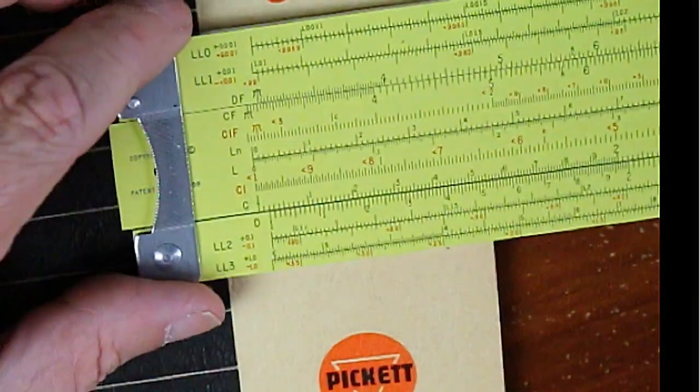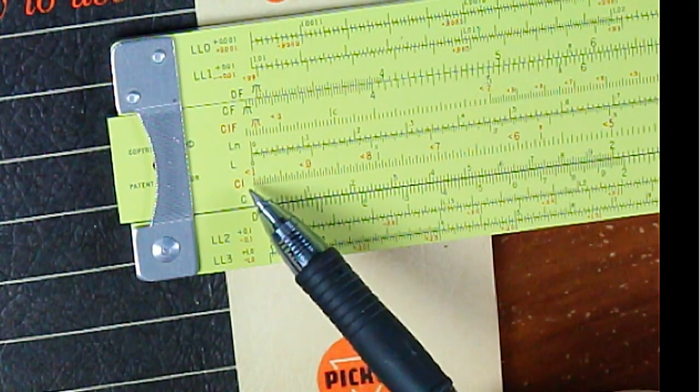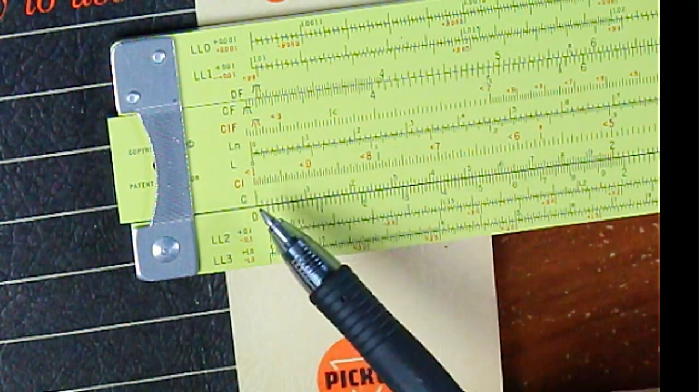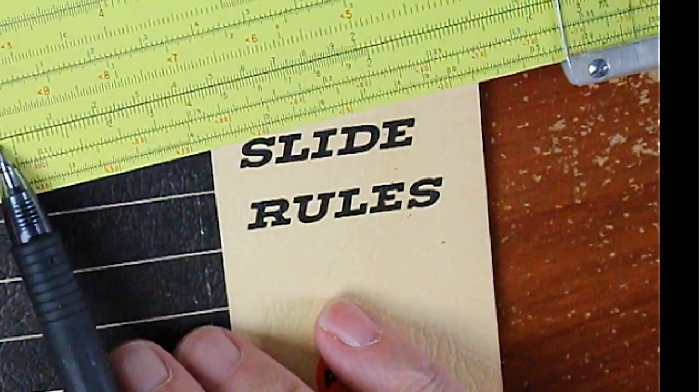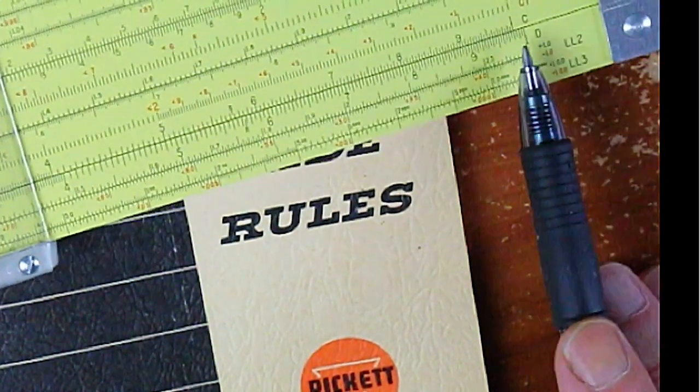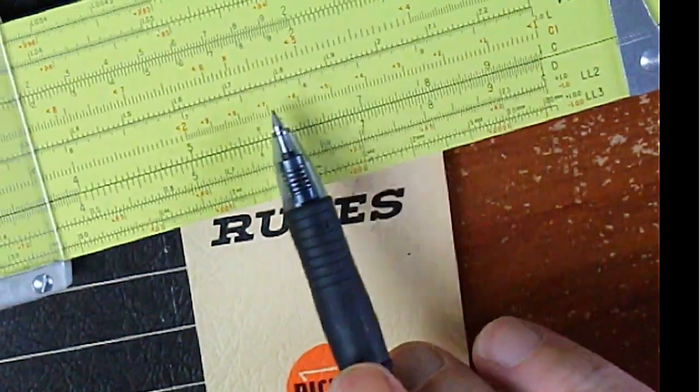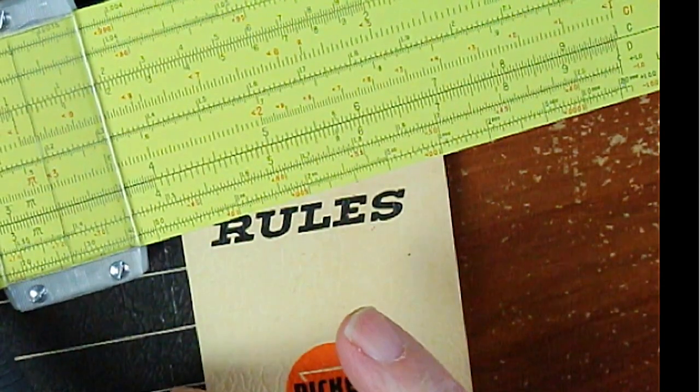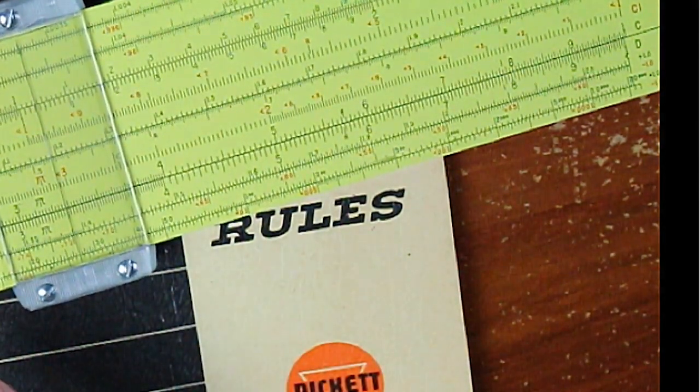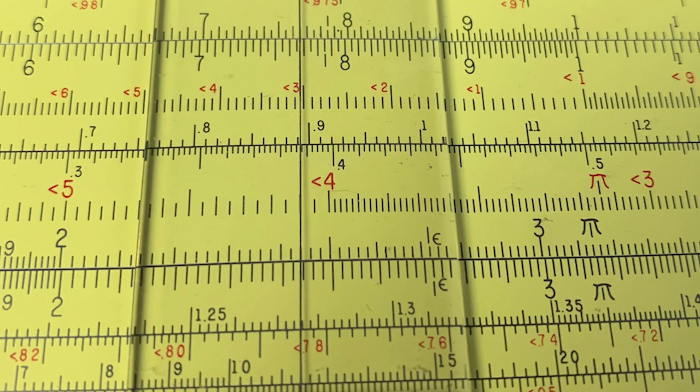Now, the next scale that I want to address is this one right here. This is called the CI scale. Now, what CI scale stands for is the inverse of the C scale. The C scale starts with 1 here, and it works its way up to 1 again, which represents 10. The CI scale starts with 1 here, and then runs backwards. That's one of the reasons that it's in red. It's a backwards scale. Because if you look at this 4 right here, that's not really 4. What that is, is 1 over 4.